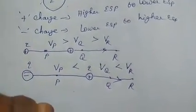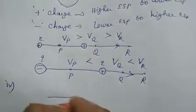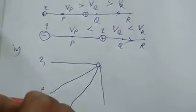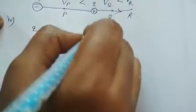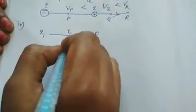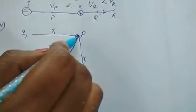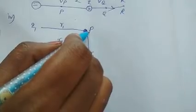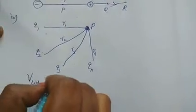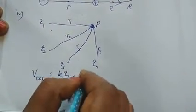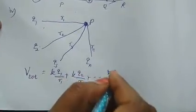Fourth point: consider multiple charges Q1, Q2, Q3, up to QN. We calculate the electric potential at point P, where the distances from P to each charge are R1, R2, R3, up to RN. The electric potential at point P equals the sum of the potentials due to each individual charge: V total equals K times Q1/R1 plus K times Q2/R2 plus ... plus K times QN/RN.